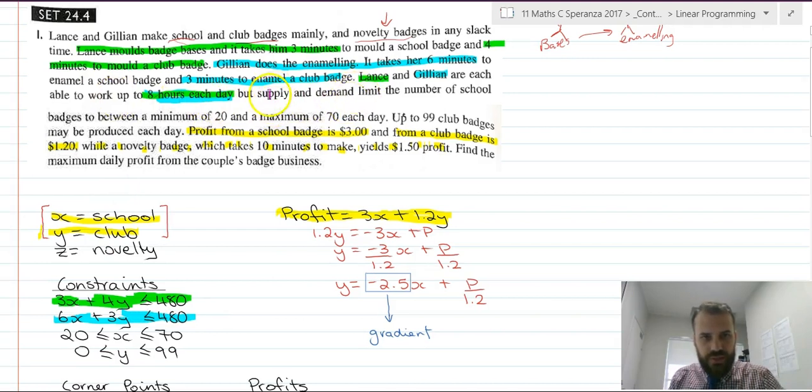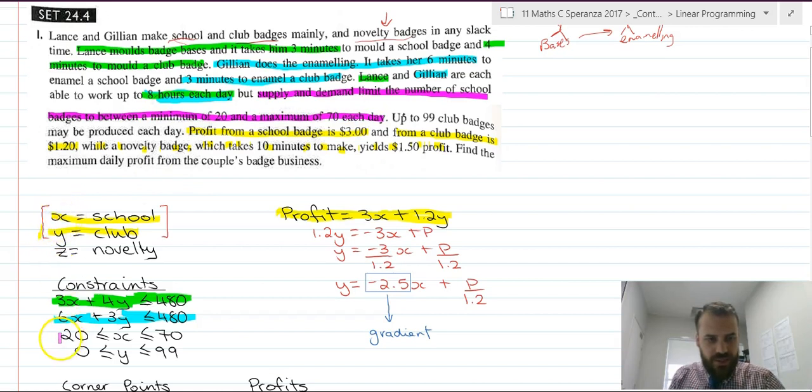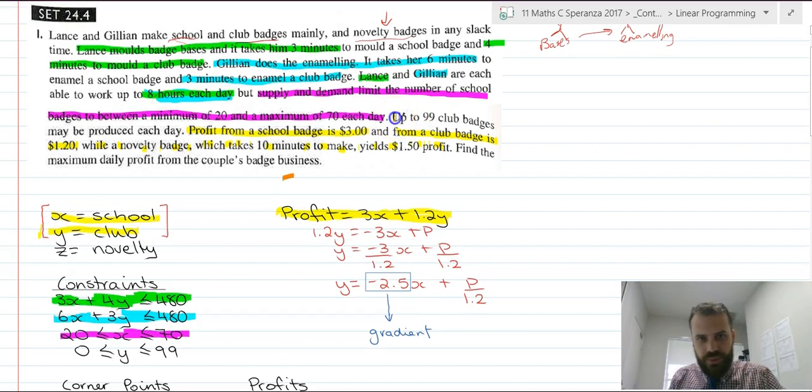So our next constraint. Supply and demand limit the number of school badges to between a minimum of 20 and a maximum of 70. So school badges is X. So X has to be between 20 and 70. And then there's our final constraint. Up to 99 club badges may be produced each day. And there's our constraint. Club badges can be between 0 and 99.